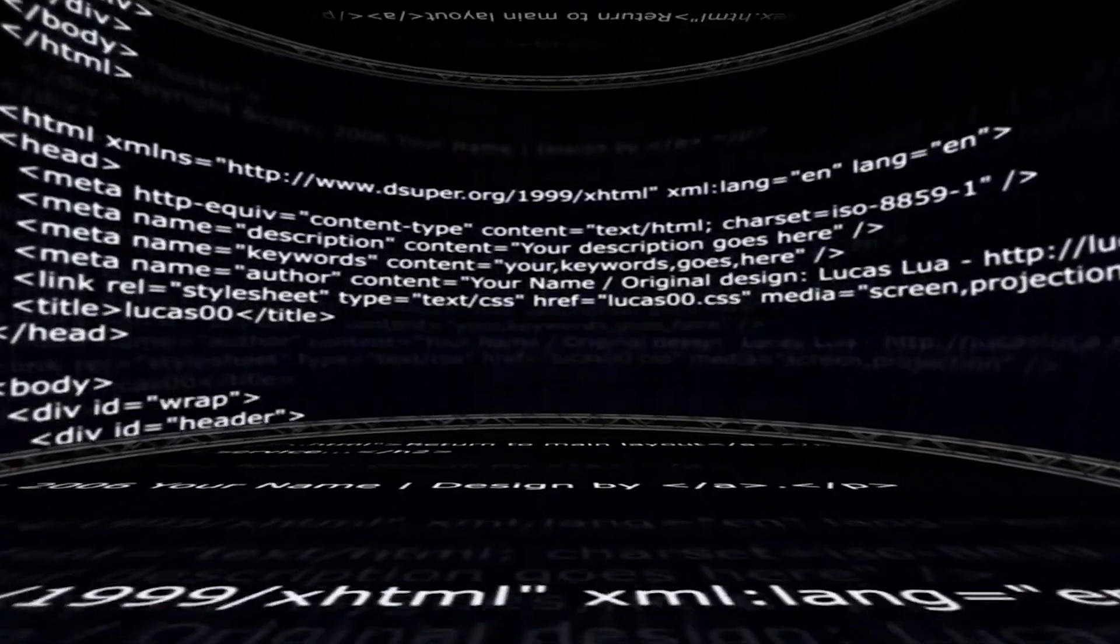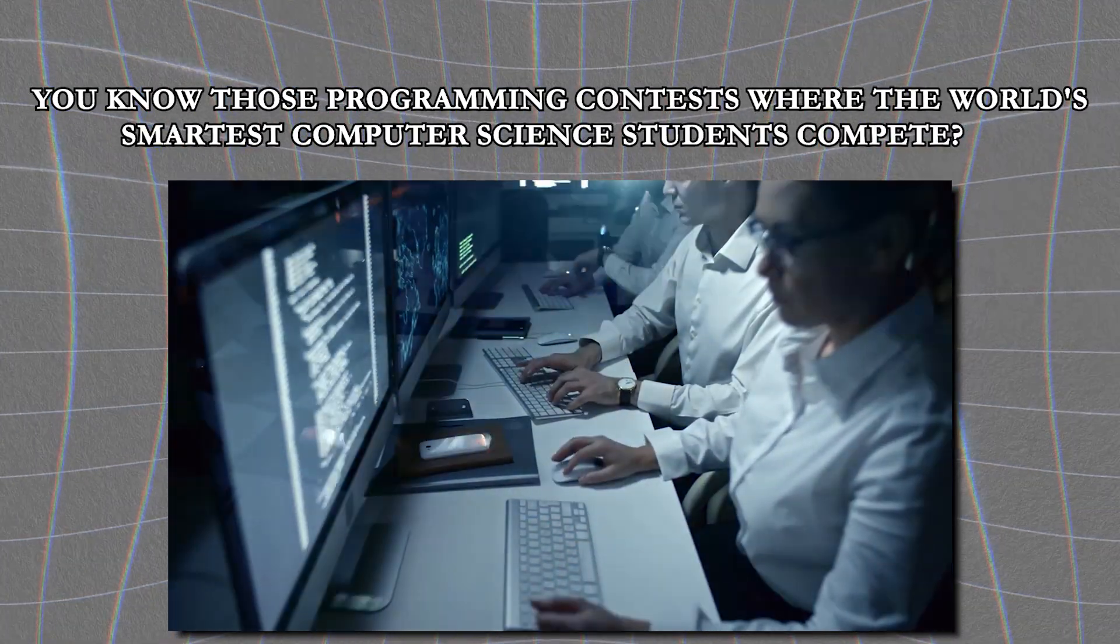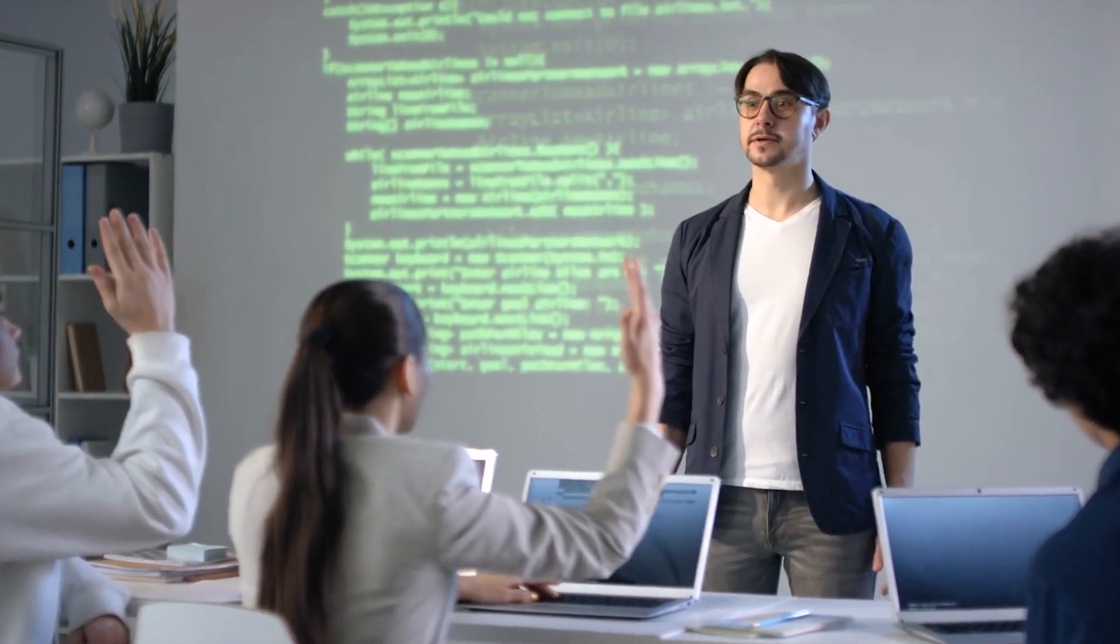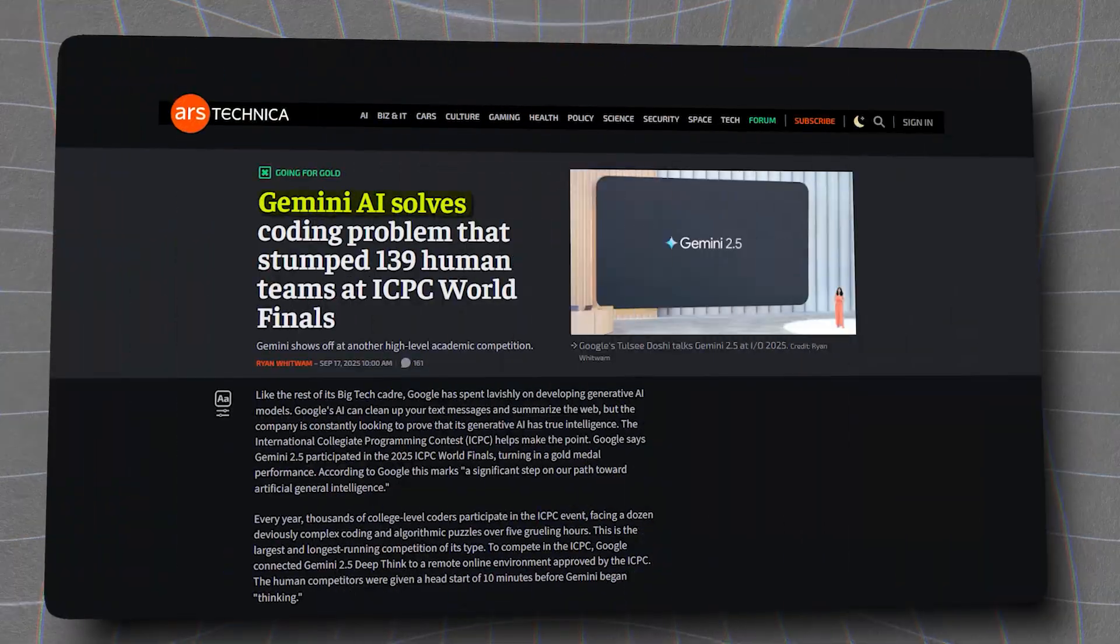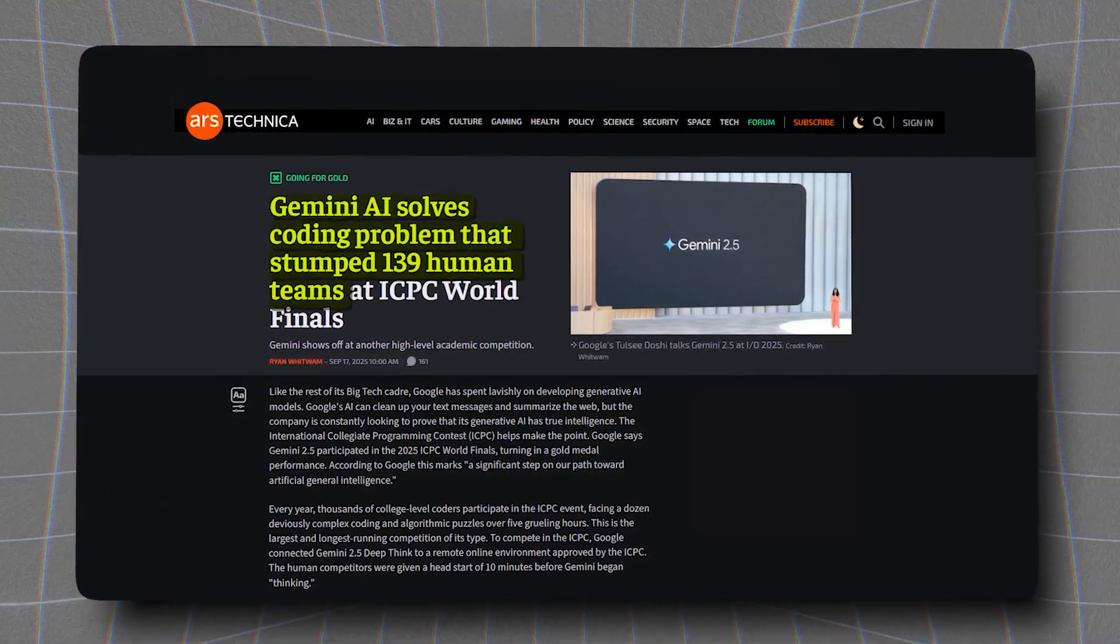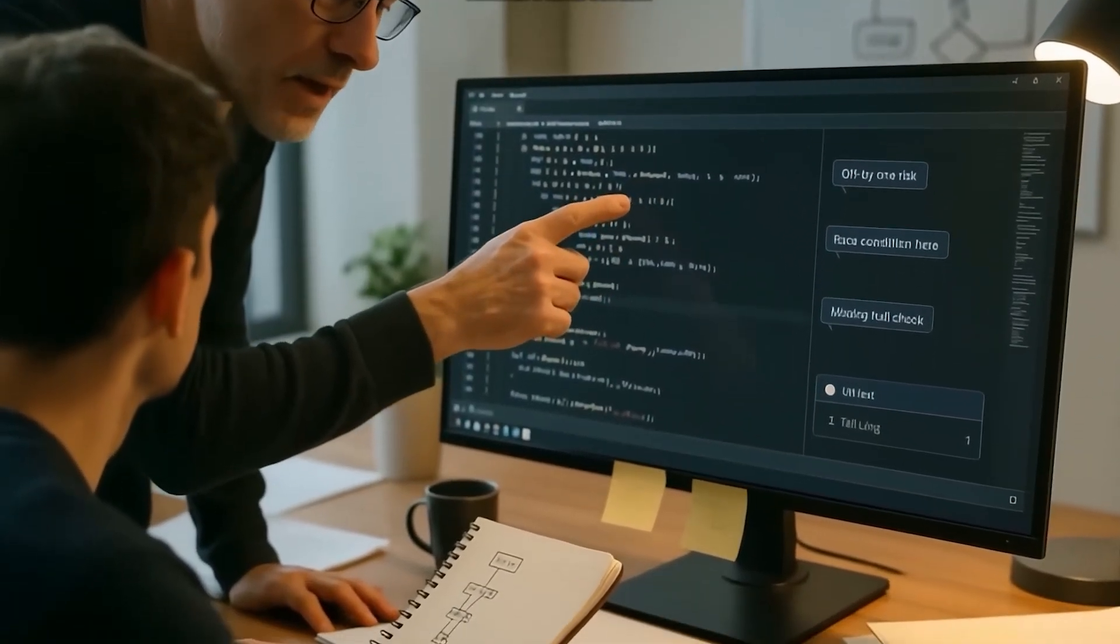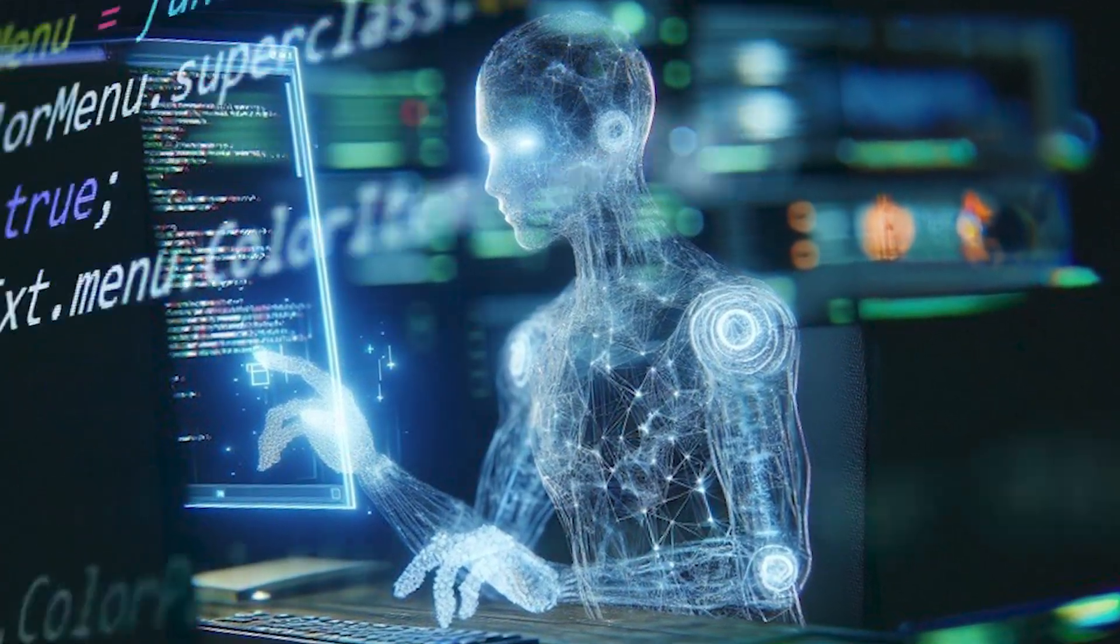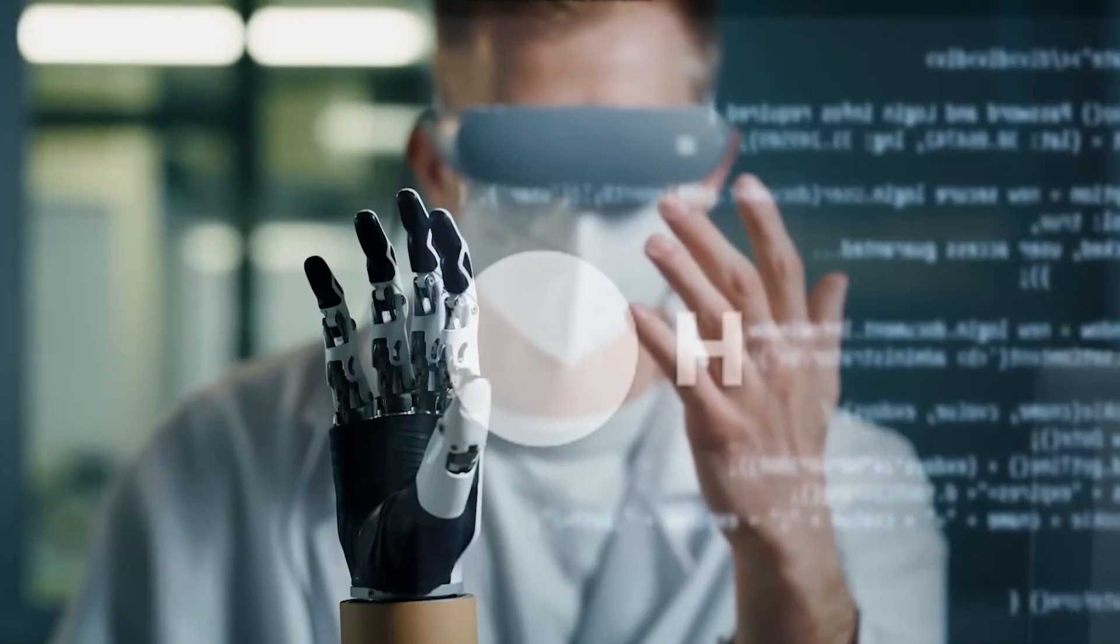Then came the coding competitions. You know those programming contests where the world's smartest computer science students compete. The problems are so difficult that teams of brilliant humans often walk away with zero solutions. In 2025, Google's Gemini AI solved a challenge that stumped 139 top human teams. While human programmers hit dead ends and debugging loops, the AI generated, tested, and refined solutions around the clock until it cracked the code. One judge said it felt like someone had broken the game.